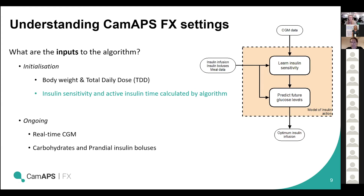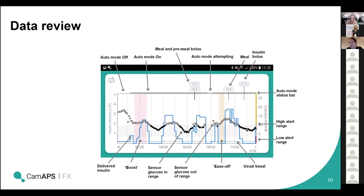On the graph you can see the dots — when they're open they're above the target range, when they're filled in black they're entering the target range, which is 3.9 to 10 in the non-pregnant population with type 1 diabetes. The thick blue line at the bottom is the closed loop driven insulin delivery, and at the top you can see the mealtime boluses and carbohydrates being given. The pink represents boost and the yellow represents ease off — we're going to go through all of these different functionalities and how we can use them to get the best outcomes.